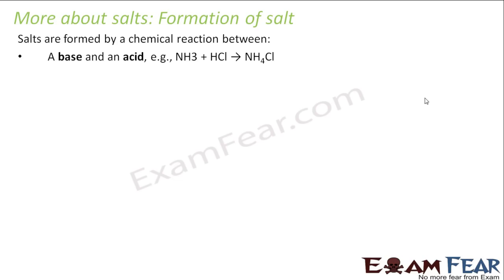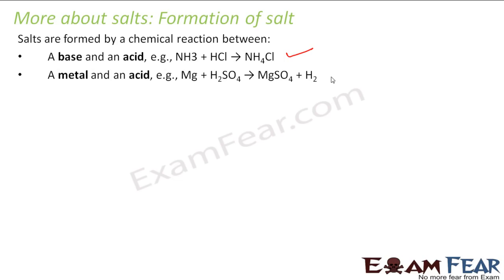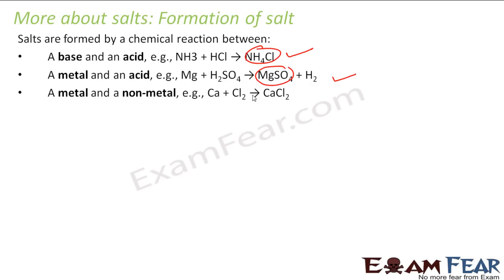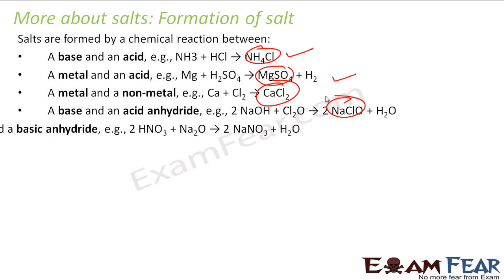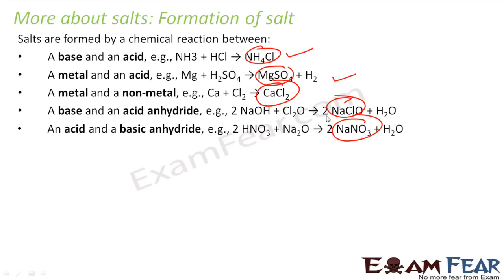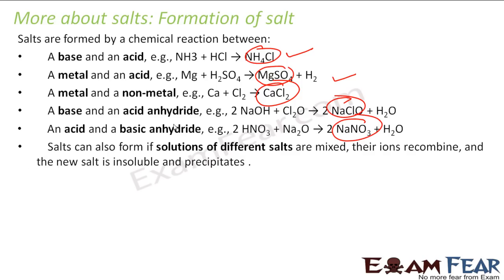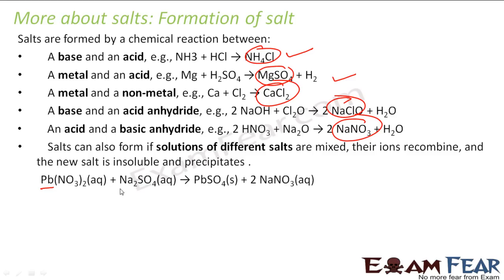Now we will learn a little more about salt. Salts are formed by the chemical reaction between acid and base — we have learned this. Also, metal and acid gives a salt. Metal and non-metal gives a salt. Base and acid anhydride gives a salt. Acid and basic anhydride gives a salt. Salt can also form when solutions of different salts are mixed — the ions recombine and form a new salt. For example, PbNO3 plus Na2SO4 gives PbSO4. Both are salts combined to give a new salt. This is a double displacement reaction.